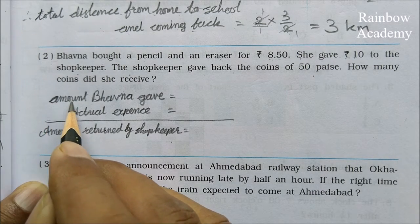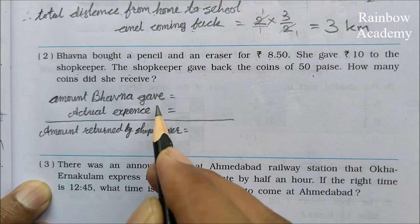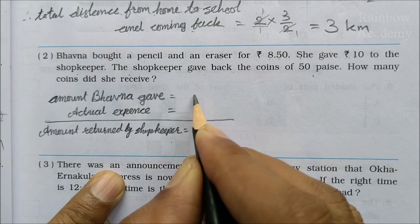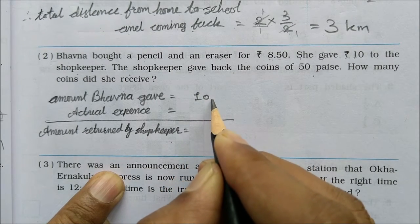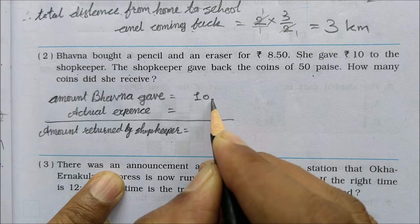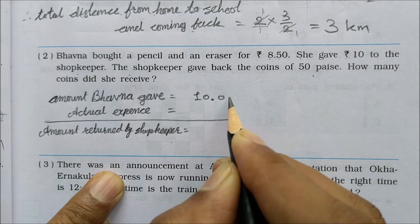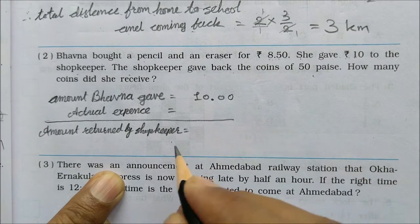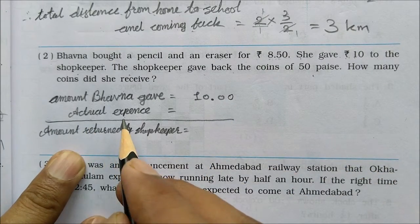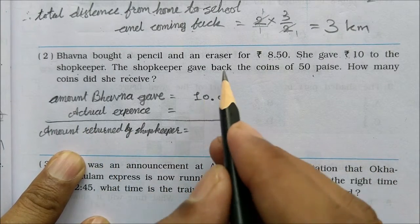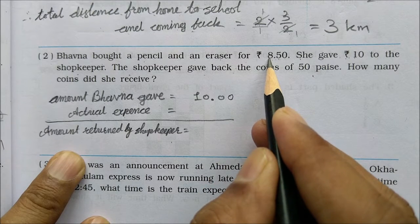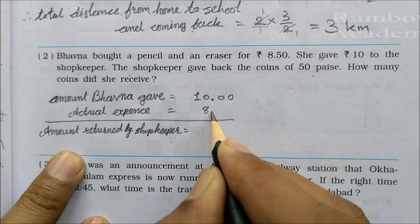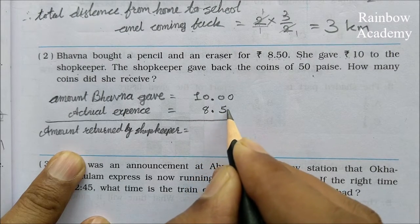Here I have written: amount Bhavna gave is 10 rupees, so we write 10.00. Actual expenses were 8.50 rupees. Now we subtract 8.50 from 10.00 to find the change.